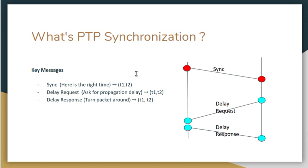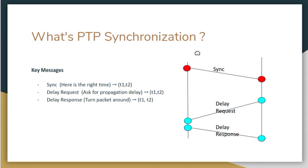We describe the key messages involved in PTP. The first message is sync, which says 'here is the correct time.' The system on the left serves as the source, commonly referred to as the master or Grandmaster, and it sends a sync message to the machine on the right. It's sent at time t1 and received at time t2.